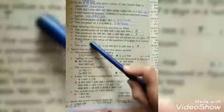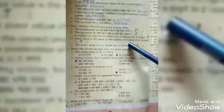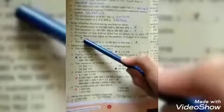D, place value is the value of the position of a digit in a number. Yes, this one is true.